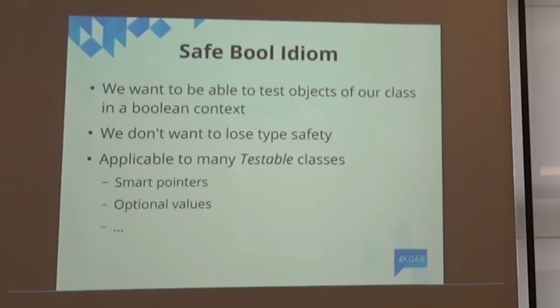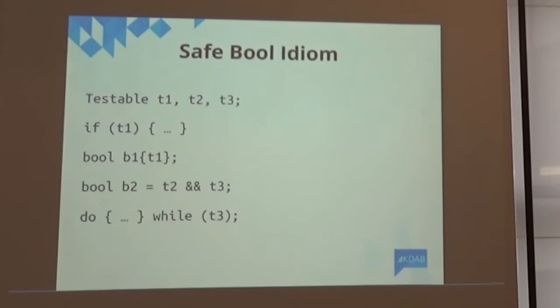In case you didn't know, that's something we call in C++ the safe bool idiom. I'm not going in detail about what this is about, but it's basically a trick we need to use in order to make this type testable in a Boolean context. So basically, we want to write a testable data type, smart pointers, optional values, all of those are testable, and I want to write something like if T1 or do while T3.